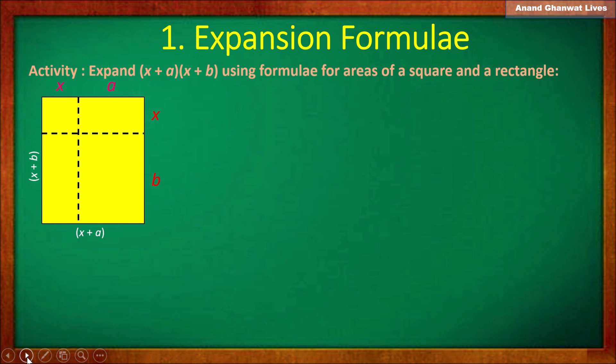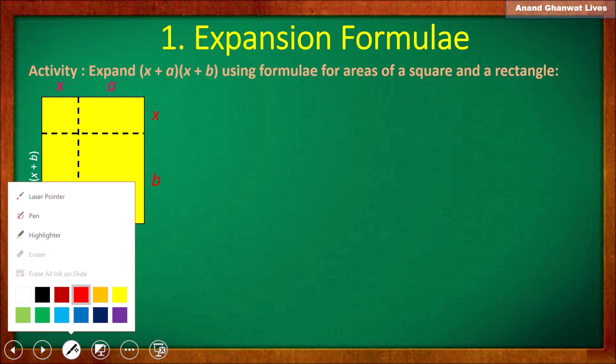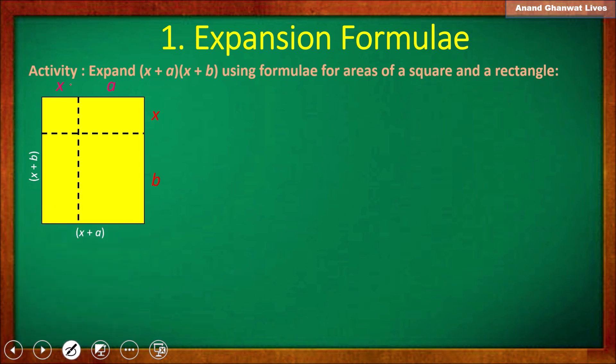The measurements are: the length is divided into x and a, and the breadth is divided into x and b. Now we got four parts. Observe the first part — each side is x, so that part is a square. The other three parts are rectangles.